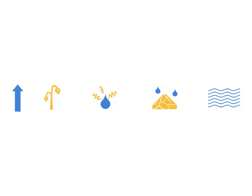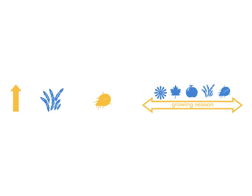Droughts are longer, more severe, and more frequent, leading to water stress, low soil moisture, and low river flows. Invasive pests and diseases are increasing — close to 10 million acres of forest have been killed in the United States by epidemics of bark beetles.